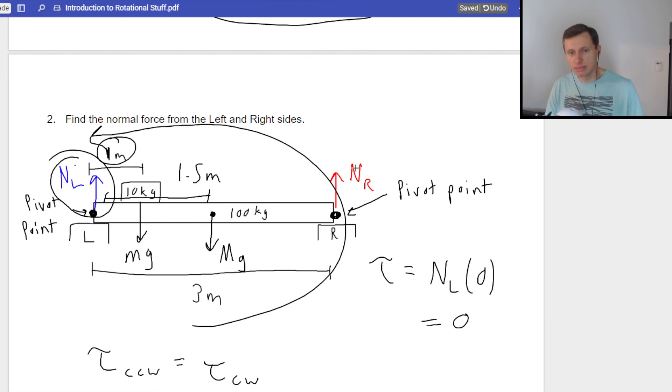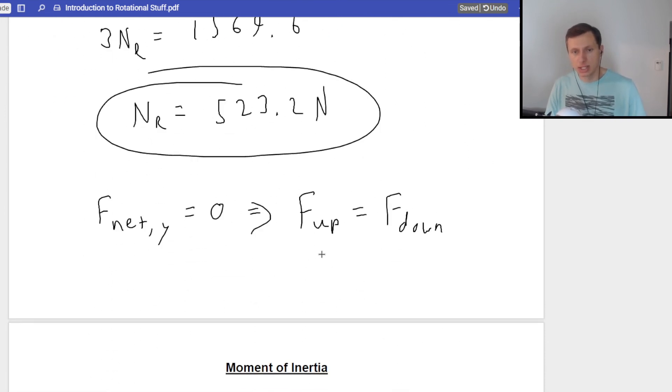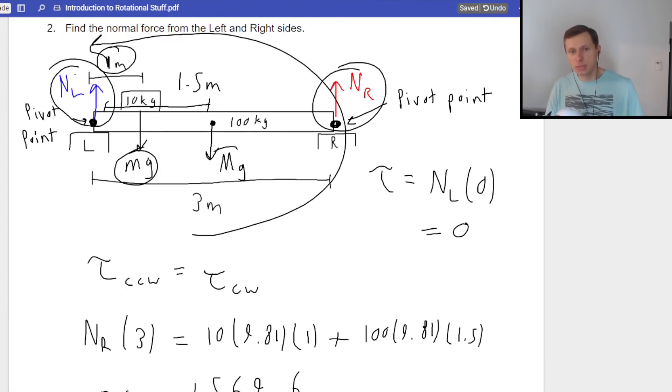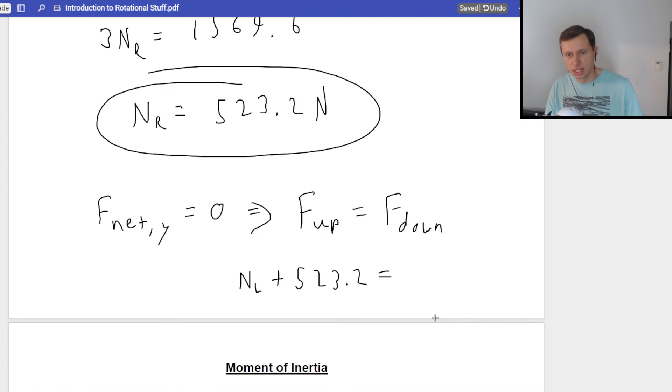This is Newton's second law back in the linear, the translational world, the not rotational world. So I'm looking at all my forces pointing up. I have two. I have normal force on the left, normal force on the right. So normal force L plus normal force right we just solved for, 523.2. On the right side, the force is pointing down. Again, we have two of them, that MG and capital MG. So 10 times 9.81 plus 100 times 9.81. Notice with forces, I didn't have to factor in the radius, the distance at all. It doesn't matter for forces, which is pretty cool.